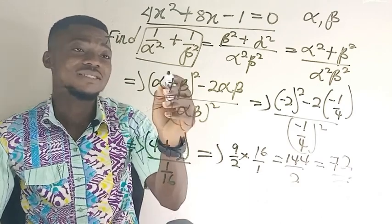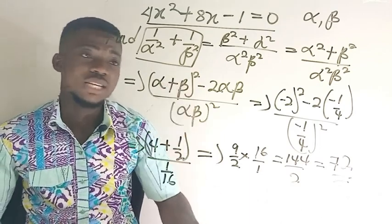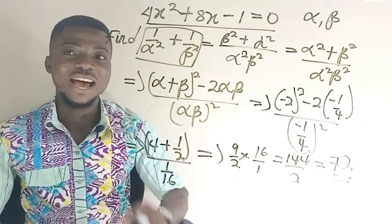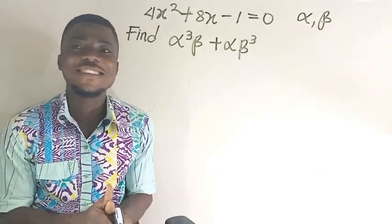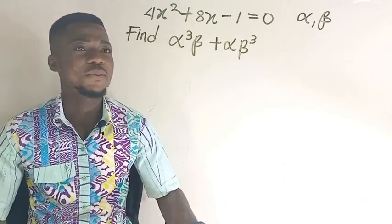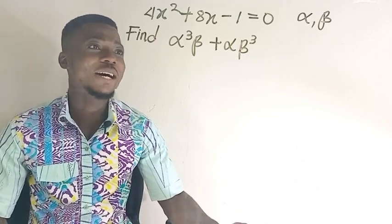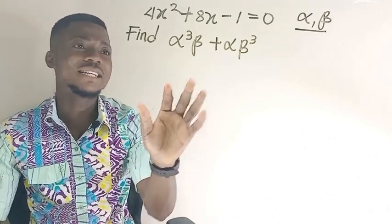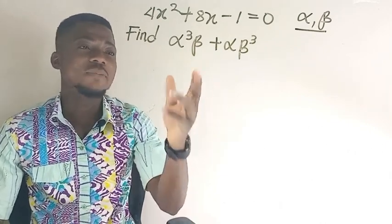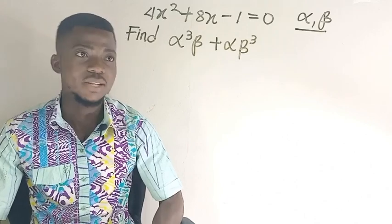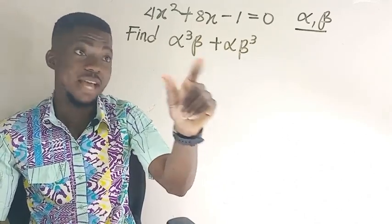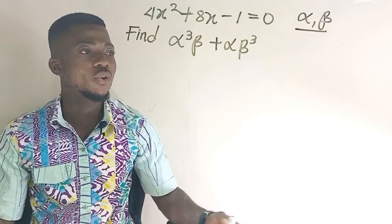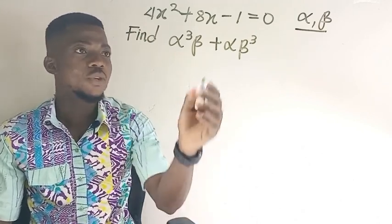So when a question is given to you, you have to solve that expression. After that, you find the sum and product of the roots. You come and fix it in the place where it needs to be fixed, then you solve it and you're going to get the answer. Let's take another example. It says that 4x squared plus 8x minus 1 equals 0 has roots alpha and beta. Now we need to find alpha cubed times beta plus alpha times beta cubed. So we need to solve this expression.